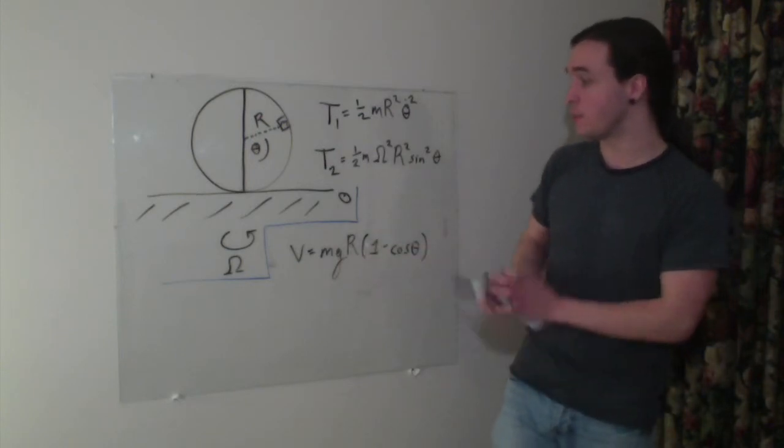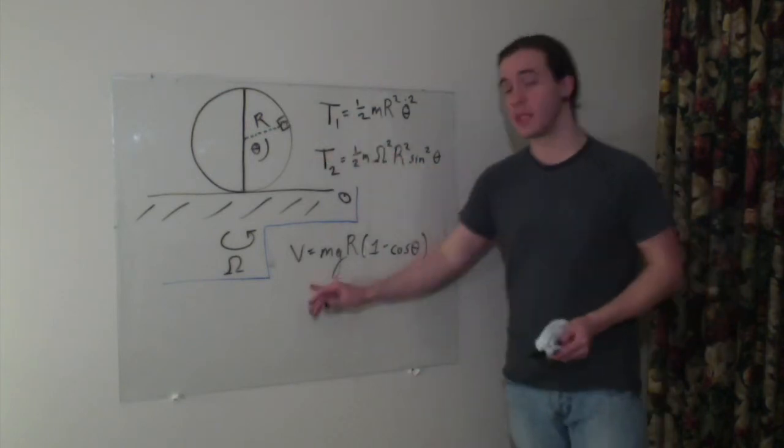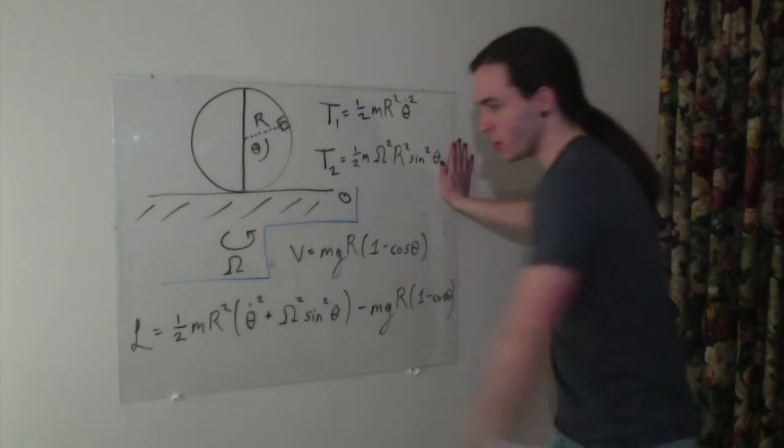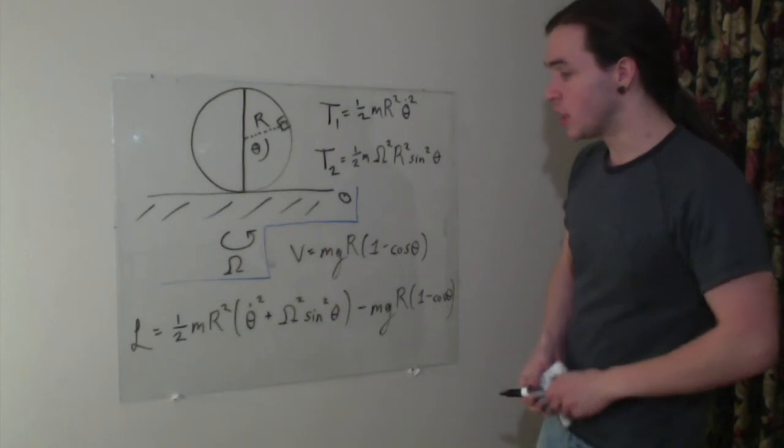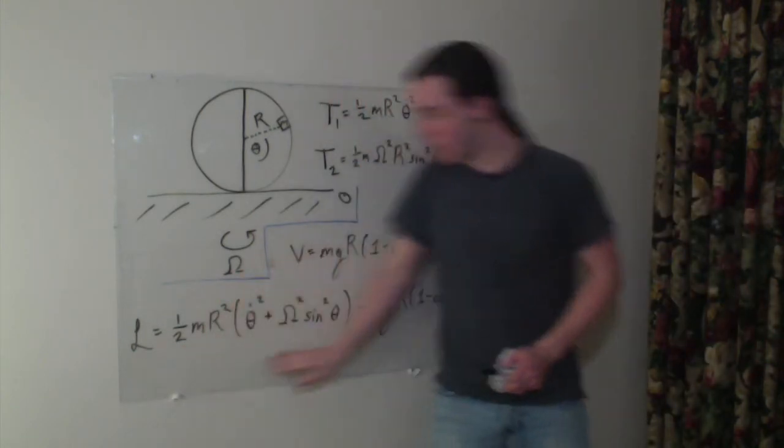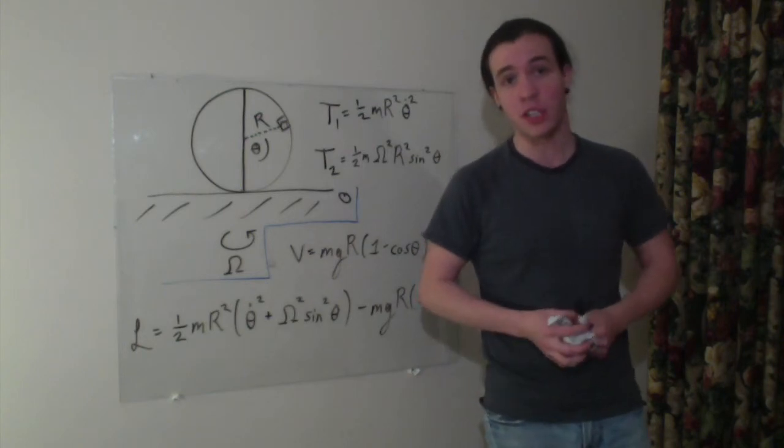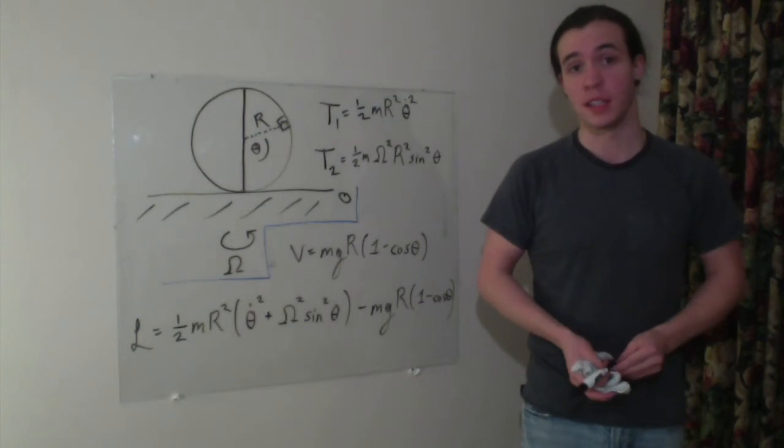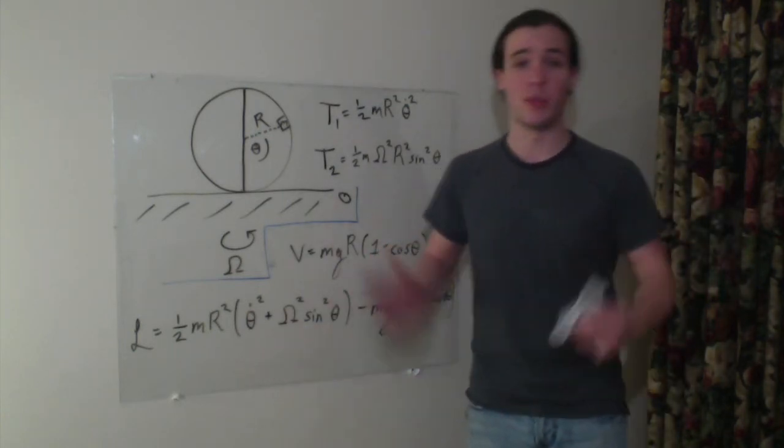So that gives us the full Lagrangian. So we add up both of these kinetic energies into one full kinetic energy, subtract the potential energy, we get this beautiful creature here, this Lagrangian, this gigantic monster. And all we have to do at this point is just plug the Lagrangian, this thing, into the Euler-Lagrange equation and we'll get our differential equation for the motion of this system. And it's that straightforward. At this point it would just be taking the partial derivatives and then setting them equal to each other.